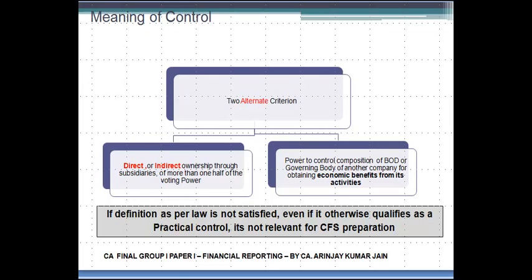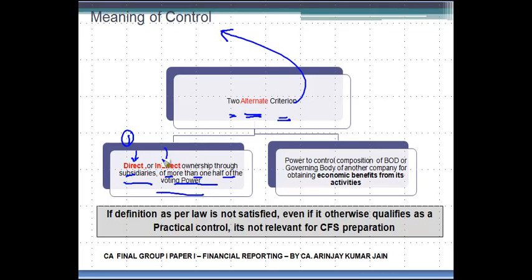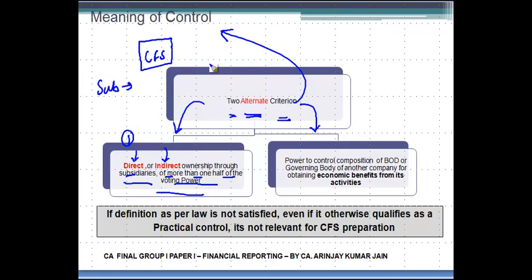So, to recap: if you own directly or indirectly — through subsidiaries — more than one half of the voting power, the first criterion for control is satisfied and you are a subsidiary. The parent company is then supposed to prepare consolidated financial statements. The second criterion is power to control the composition of the board of directors or governing body of another company for obtaining economic benefit from its activity.